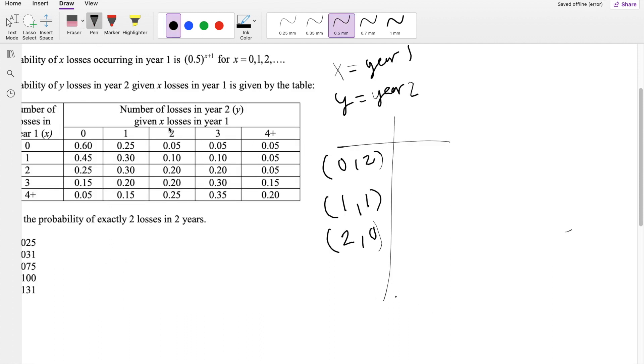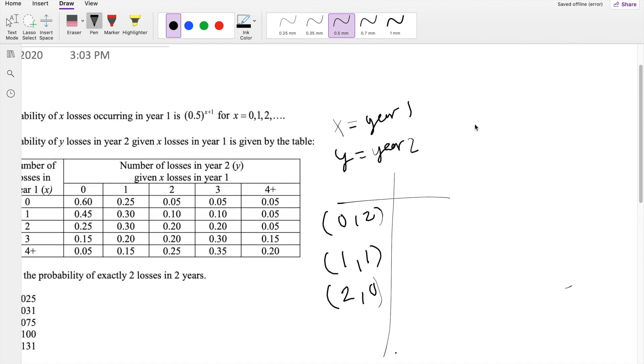The second year is actually dependent on the first year. This chart gives you the probability of Y given X. By the conditional probability formula, we can say this is equal to the probability of Y comma X divided by the probability of X. So the probability of X comma Y is equal to the probability of Y given X times the probability of X.